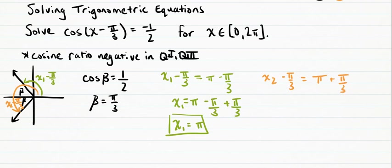Again I add pi over 3 to both sides to get x2 equals pi plus pi over 3 plus another pi over 3, so x2 is 5 pi over 3.